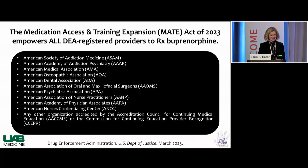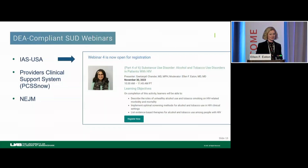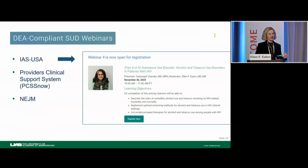The American Academy of the Dental Association and OMSF are also included, in addition to Addiction Medicine and Psychiatry — really a broad call. Nurses, nurse practitioners, PAs — we all can be a part of the solution to treating the opioid crisis. There is an IAS USA MATE-compliant webinar training. The PCSS is another website with great content. New England Journal also has online, free options to help you maintain certification. There's content around opioid use disorder and addiction more broadly that can help you meet that eight-hour training requirement.